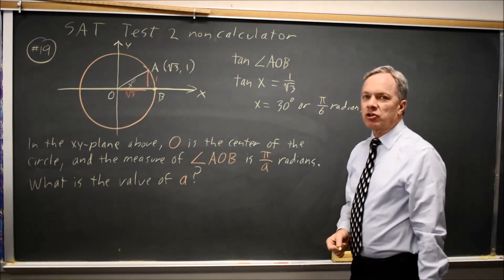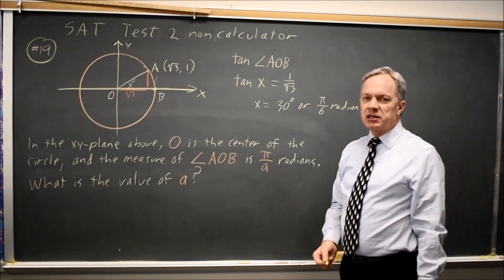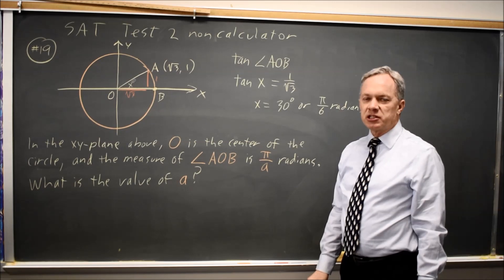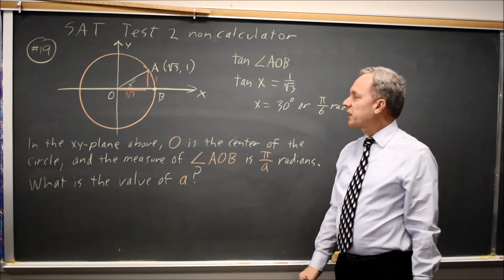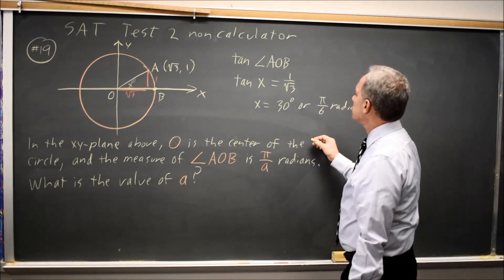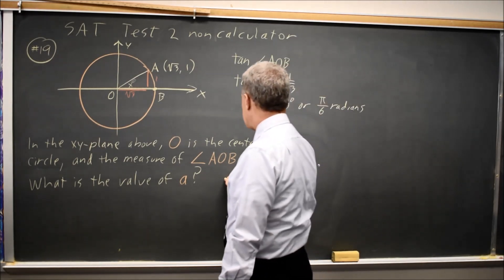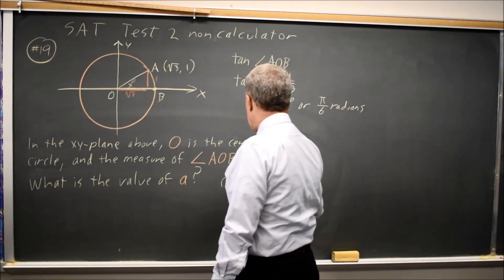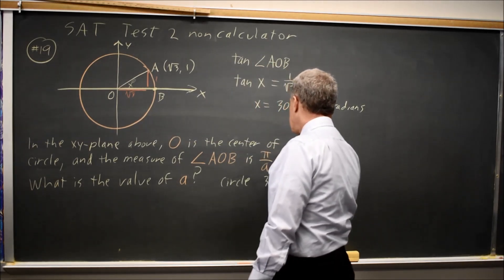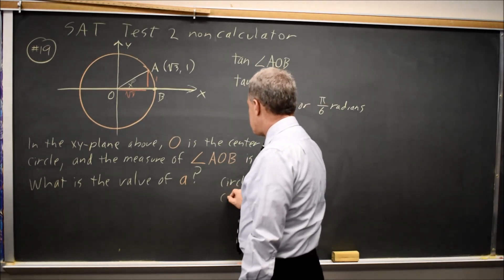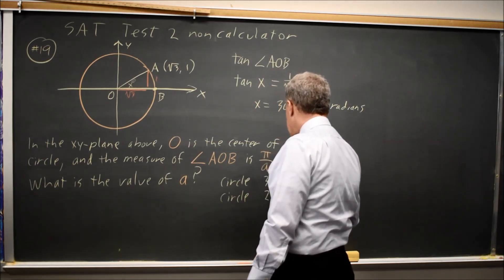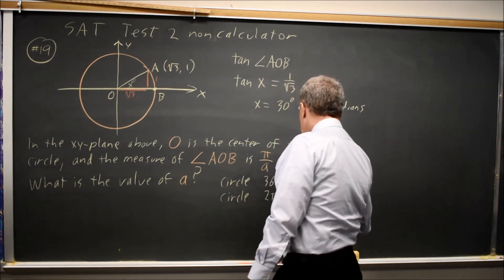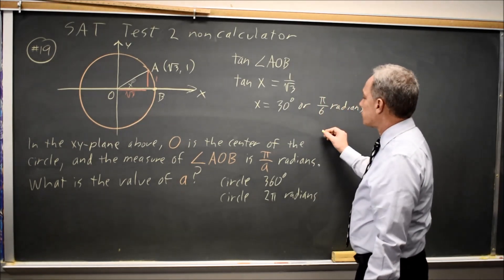If you only know the 30 degrees, keep in mind that the formula sheet at the start of each math section, in addition to including geometry formulas that have a picture, tell you that a circle has 360 degrees, and it says that a circle has 2 pi radians.